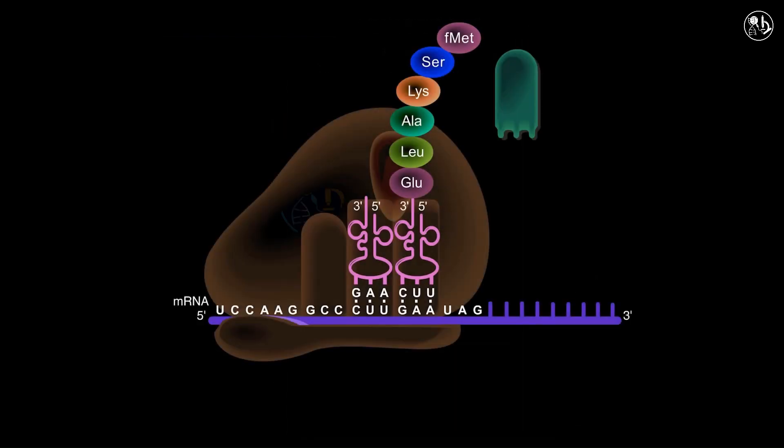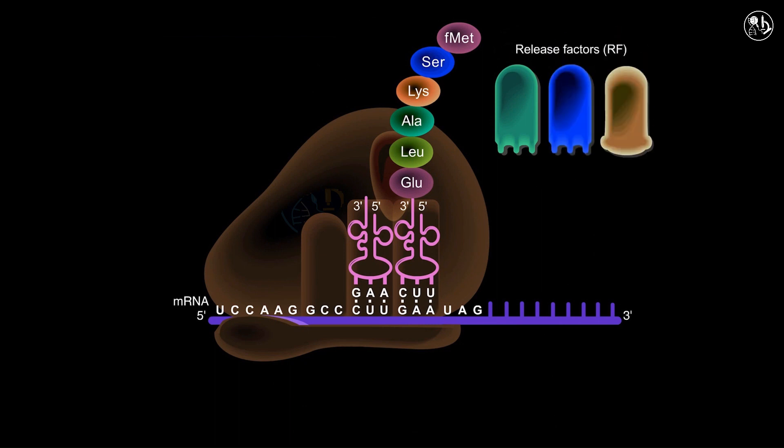Proteins known as release factors or RF aid the ribosome in identifying the termination of the polypeptide chain. These RFs interpret the stop codon and trigger a sequence of termination events that are highly specific. There are three RFs in E. coli.